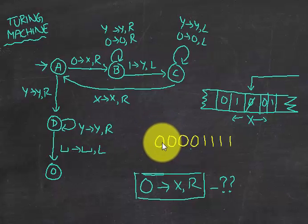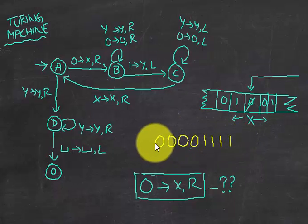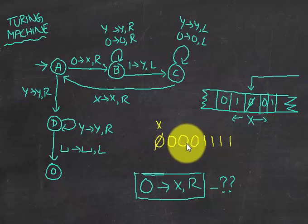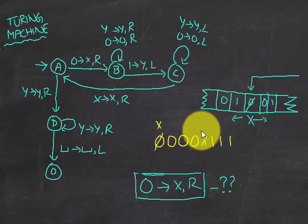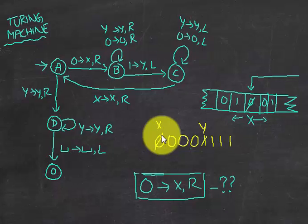Let's figure out how to solve a particular string. First, we start with zero — convert that zero to X and move to the right. We see zeros and ignore them. Whenever we see a one, we convert that to Y. After that, move left, and going left we ignore zeros. Whenever we see an X, we go to the right.